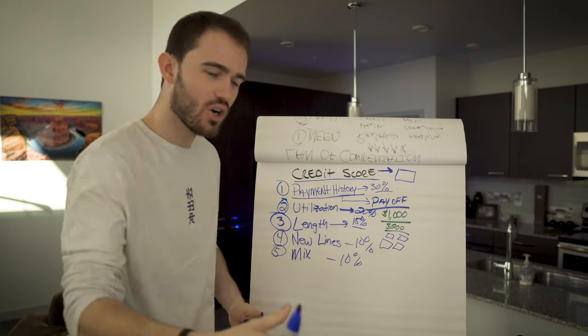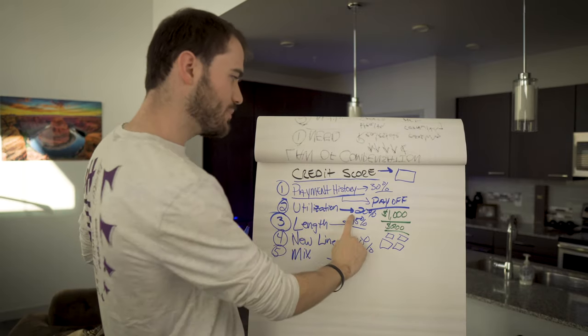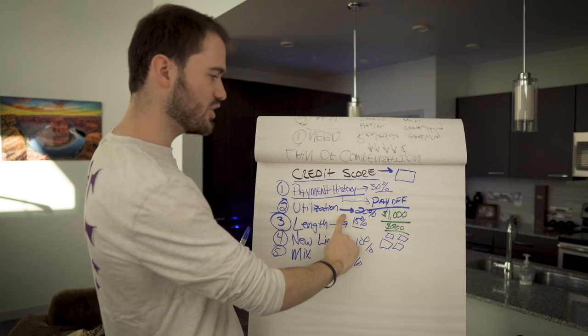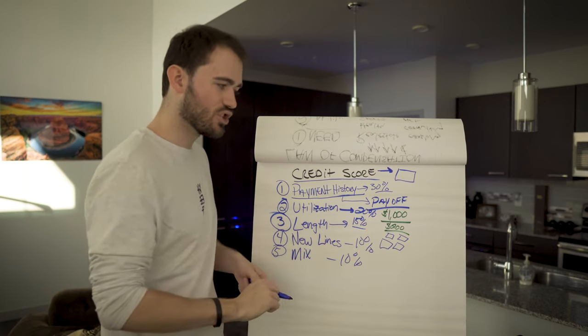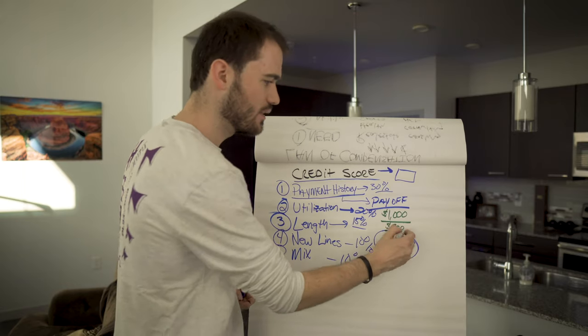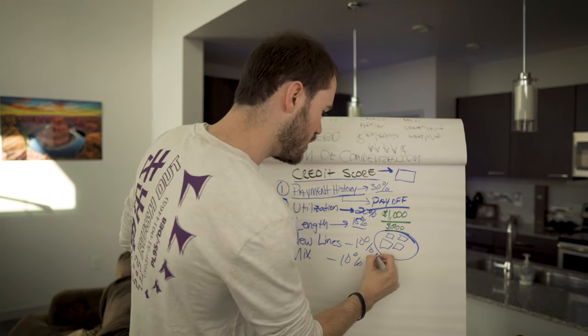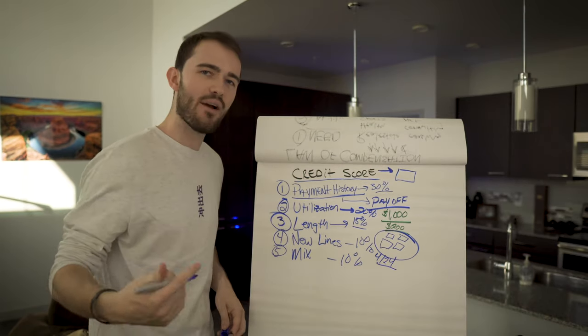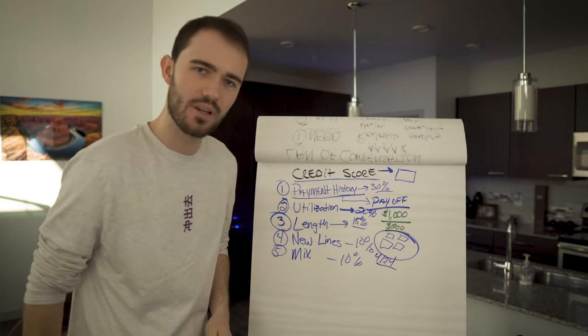However, it helps your utilization. Your utilization is more important than your length. So that's why it is actually important to go out and get more credit. Now I would recommend following a rule which is the 4/24 rule. I would not ever get more than four new lines of credit every two years, every 24 months.